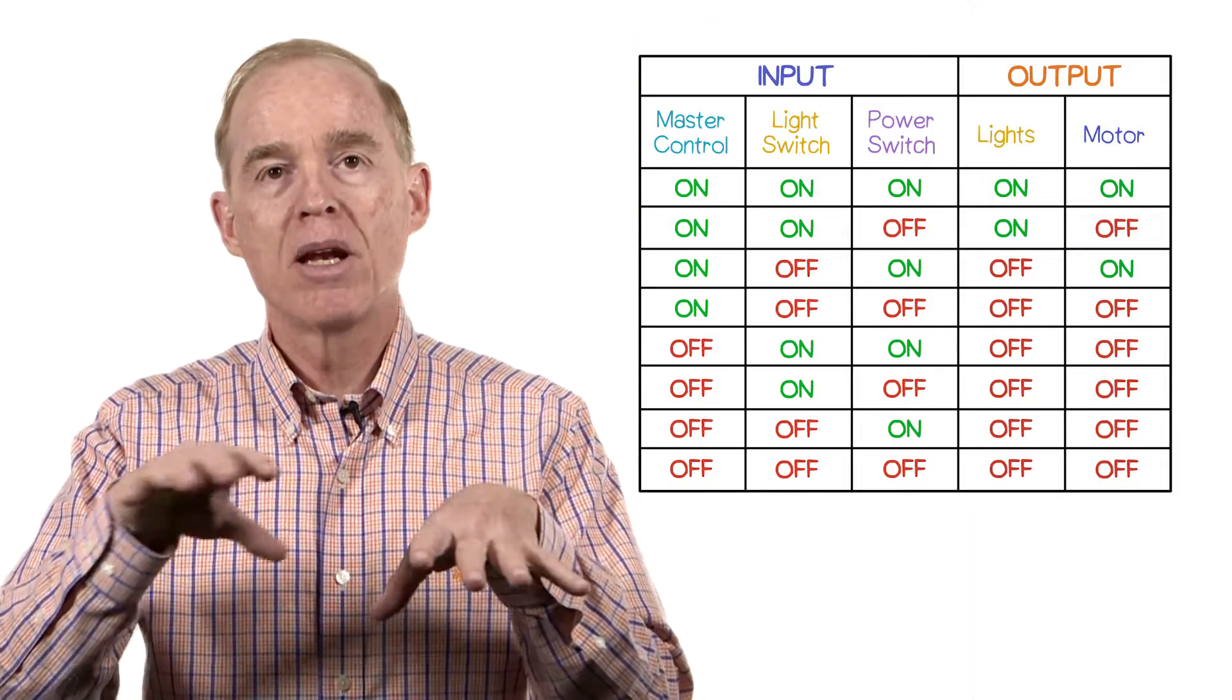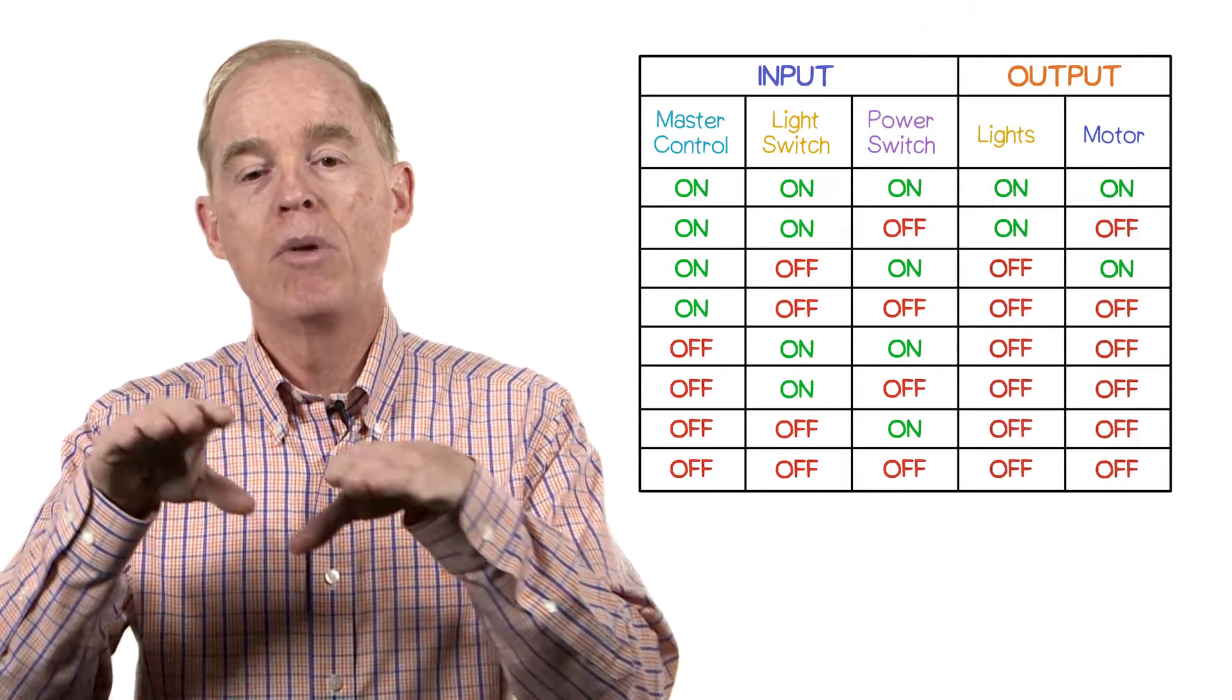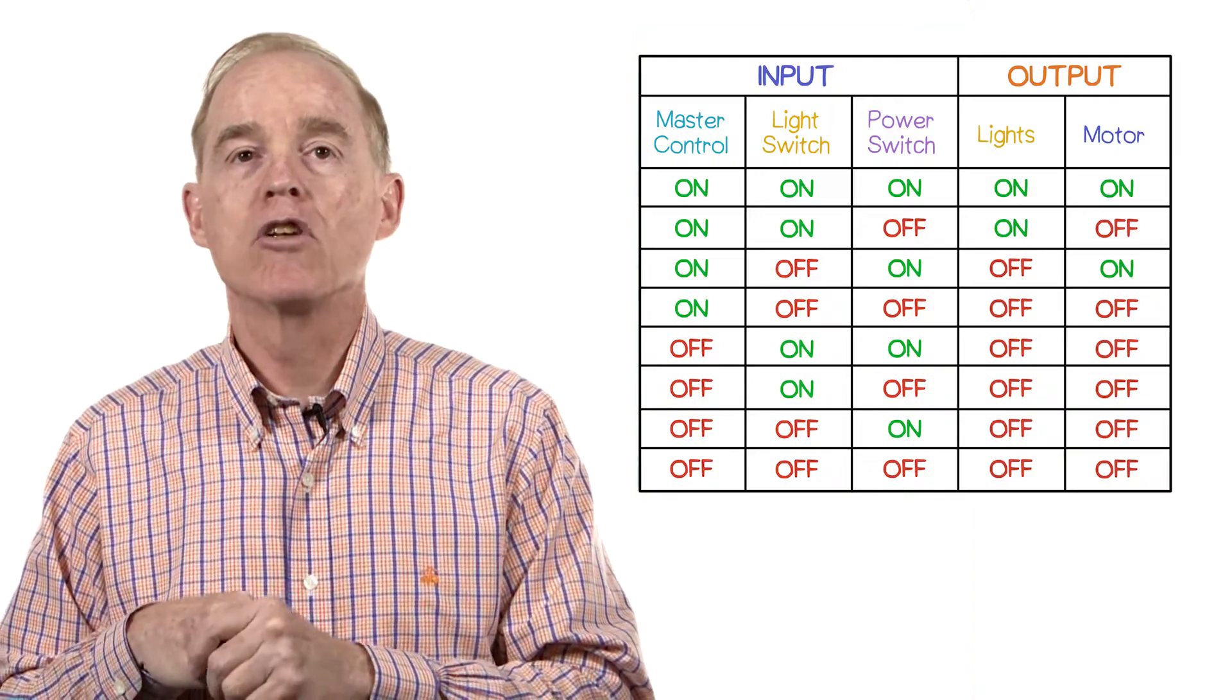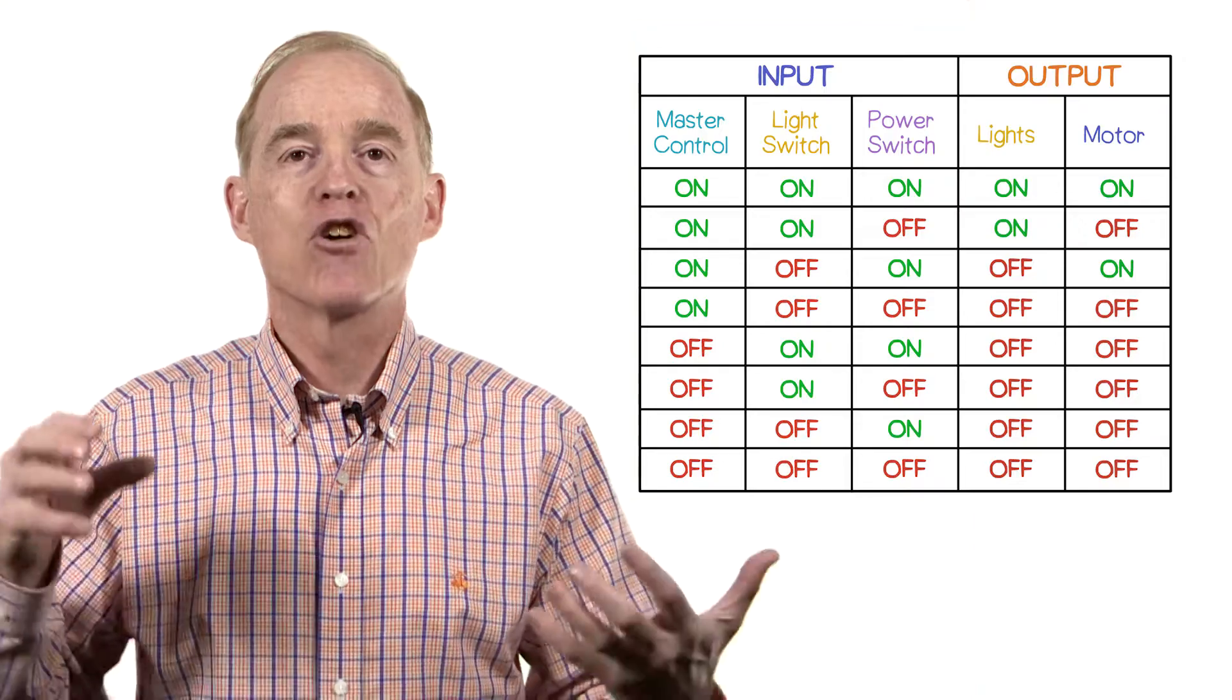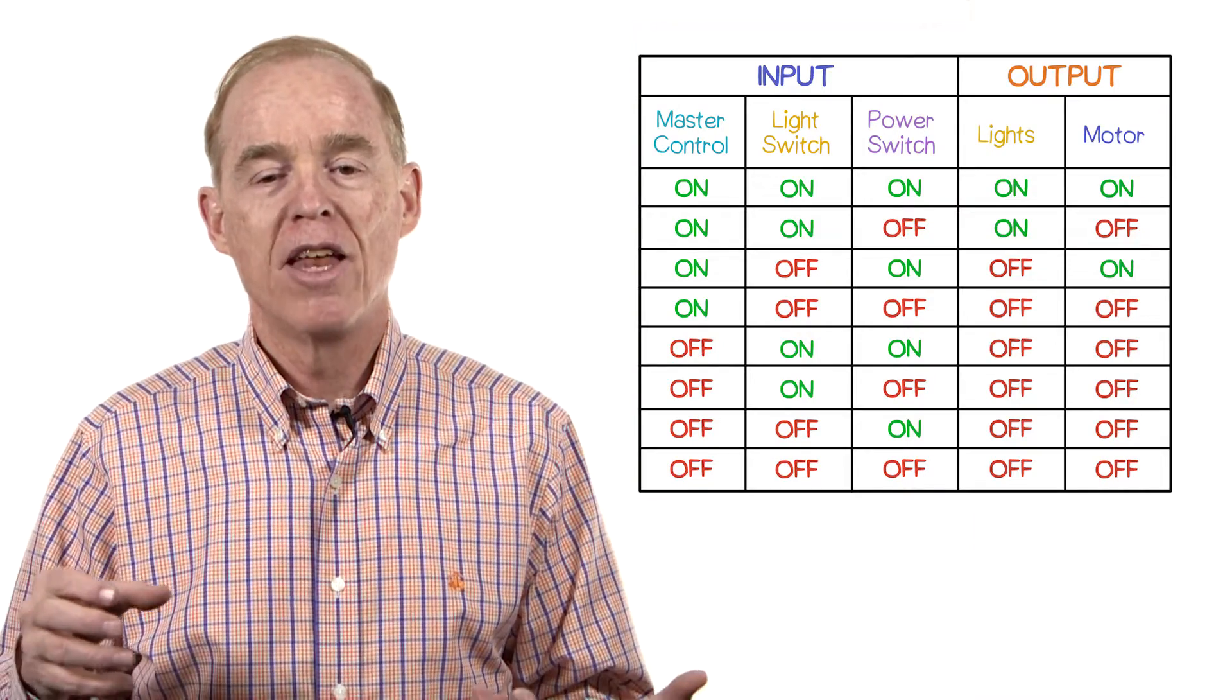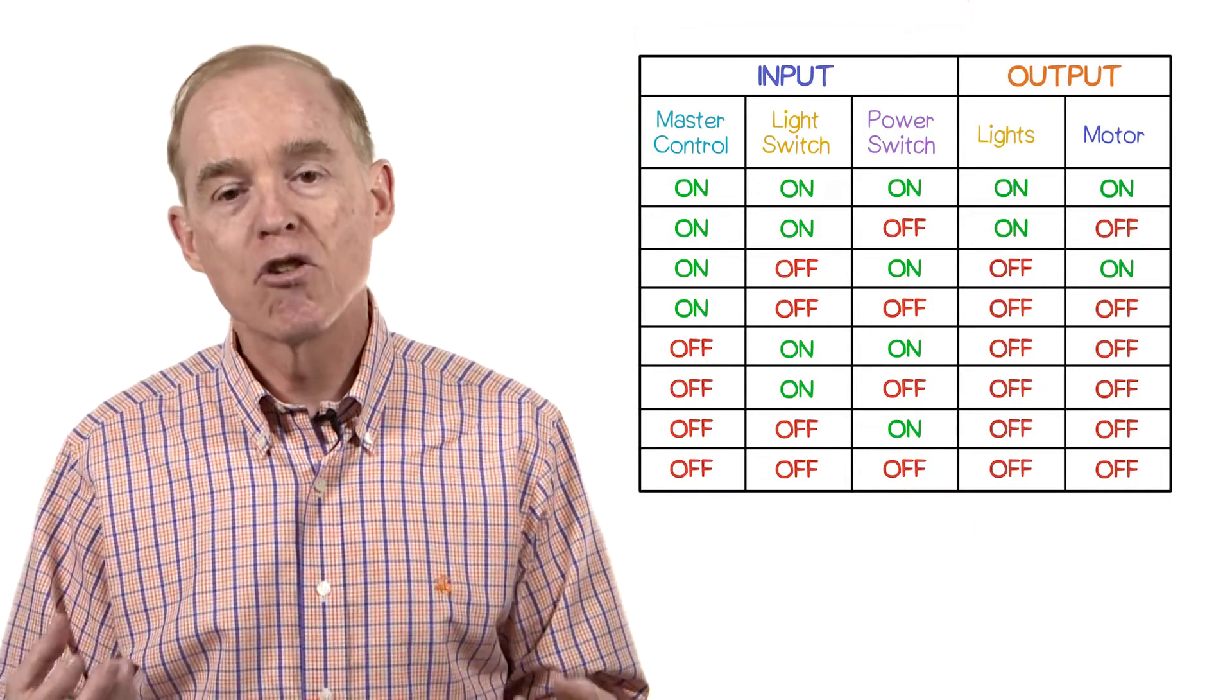For each of the combinations of the inputs, there'll be a resulting situation as far as the outputs are concerned. So for example, if the master control switch is off, then it doesn't matter the positions of the other switches.